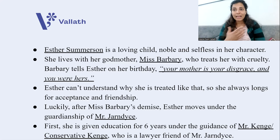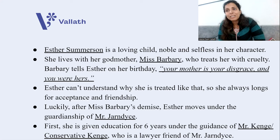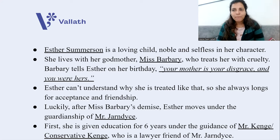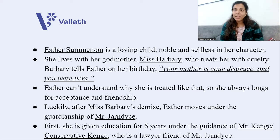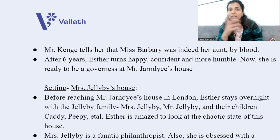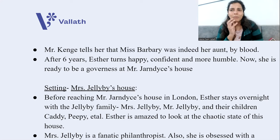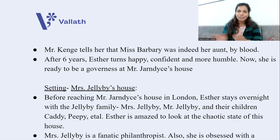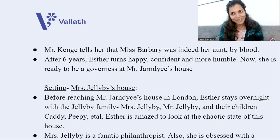Miss Barbary dies after a few years and Esther moves to the guardianship of a man called Mr. Jarndyce. Before entering his house, Esther must receive education. For this purpose, Jarndyce sends a lawyer friend named Mr. Kenge to take Esther and educate her. Kenge first reveals something shocking to Esther: Miss Barbary was not only her godmother — she was her aunt by blood. Six years pass; Esther is educated, happy, and confident, yet remains humble.